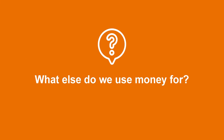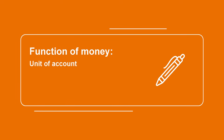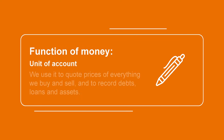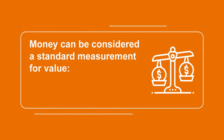Besides using money as a means of payment, what else do we use money for? If you just look around you — the chair you are sitting on, the clothes you are wearing, the pen you are using, even the education you are getting — all have value. And that value is often expressed in dollars and cents, in other words, expressed in terms of money. So money acts as a unit of account. We use it to quote prices of everything we buy and sell. In addition, we can also use it to record debts, loans, or assets. Just like using pounds or kilograms as the standard measurement for weight, money can be considered a standard measurement for value.